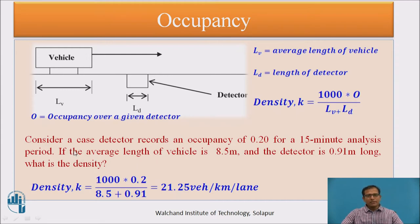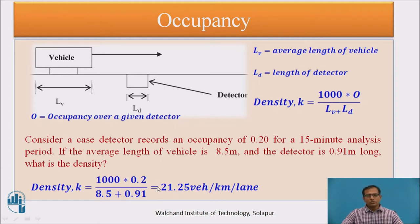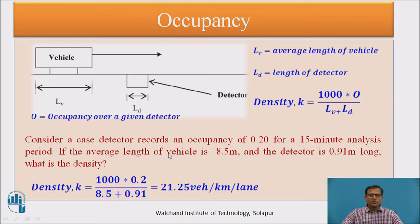For example, let occupancy O = 0.2 over a 15-minute analysis period. Vehicle length LV = 8.5 meters and detector length LD = 0.91 meters. Then density K = 1000 × 0.2 / (8.5 + 0.91) = 21.25 vehicles per kilometer per lane. So with occupancy data, we can calculate the density on a particular road section.